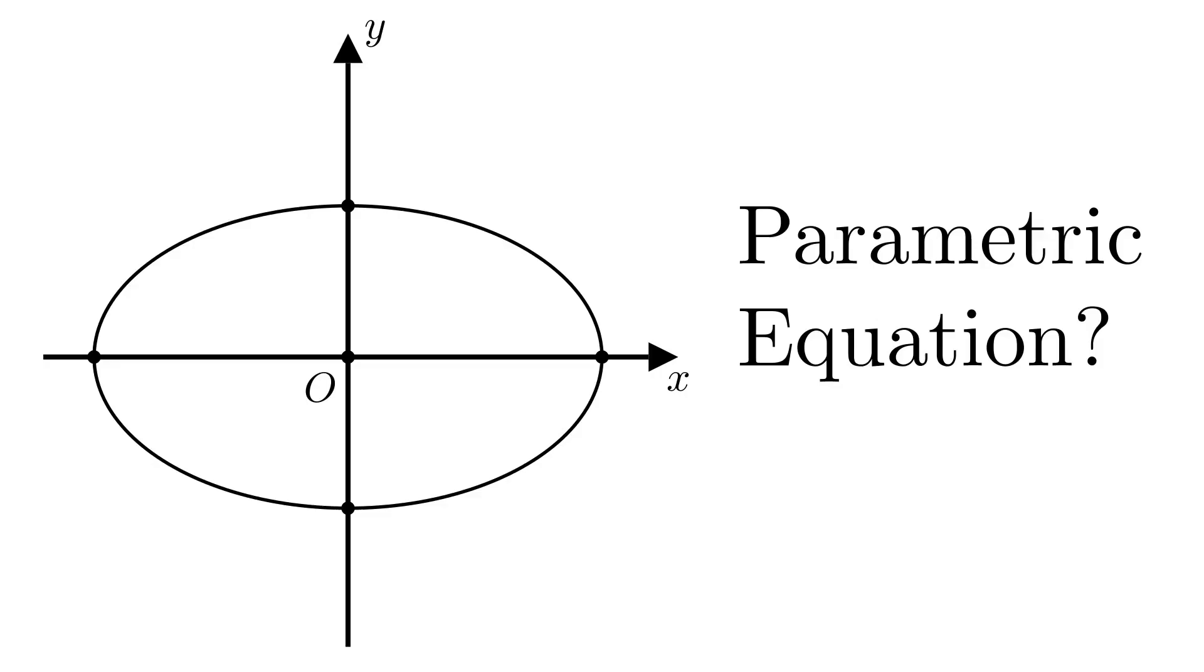Just as we did in previous videos, we'll say that our ellipse intersects the x-axis at negative a and a, and the y-axis at negative b and b.